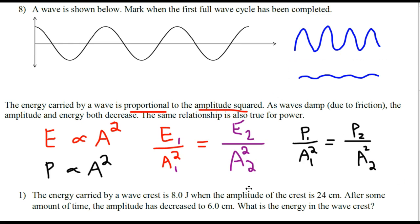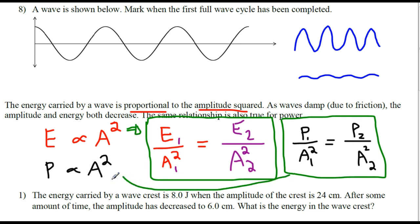And these equations, these ones that I'm circling in green, they are not given on your equation sheet. But it's easy to come to these equations. They follow directly from the proportionality. So you just have to be able to look at the proportionality and recall that the ratio of E to A squared, or the ratio of P to A squared, is always the same constant.